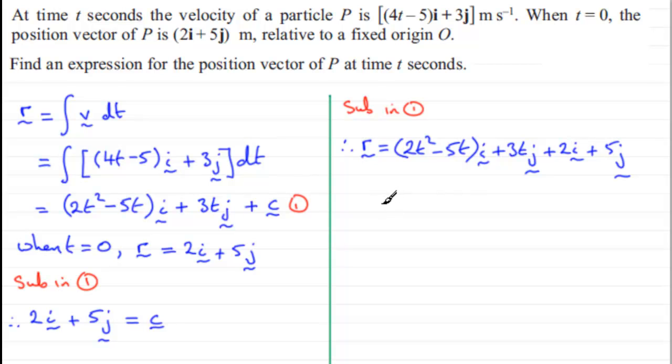Now it's not a great idea to leave this like this. It's best if we just group up our components. So for the i-components, we've got 2t squared minus 5t plus 2. So 2t squared minus 5t plus 2 in the i-direction. And then for the j-components, we've got the 5 plus the 3t. 5 plus 3t in the j-direction. And that's our value of the position vector of P at time t.